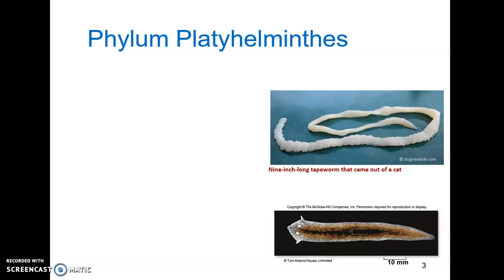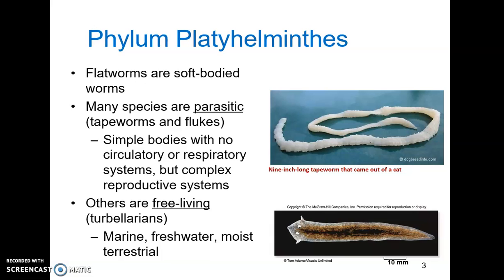Starting here with phylum Platyhelminthes: these are simple worms, soft-bodied worms that are really the simplest bilaterally symmetric animals. However, they can have complex structures. Many species are parasitic, like tapeworms and flukes. They have simple bodies with no circulatory or respiratory systems, but they can have complex reproductive systems.